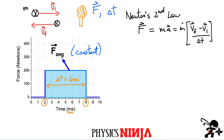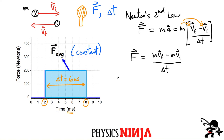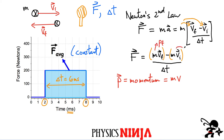If I distribute through by the mass, Newton's second law becomes: force equals mass times V final minus mass times V initial, all divided by delta T. Now I introduce momentum, which takes the letter P. Momentum is simply the mass of an object multiplied by its velocity. So mass times V final is P final, and mass times V initial is the initial momentum — both are vectors since momentum is proportional to velocity.